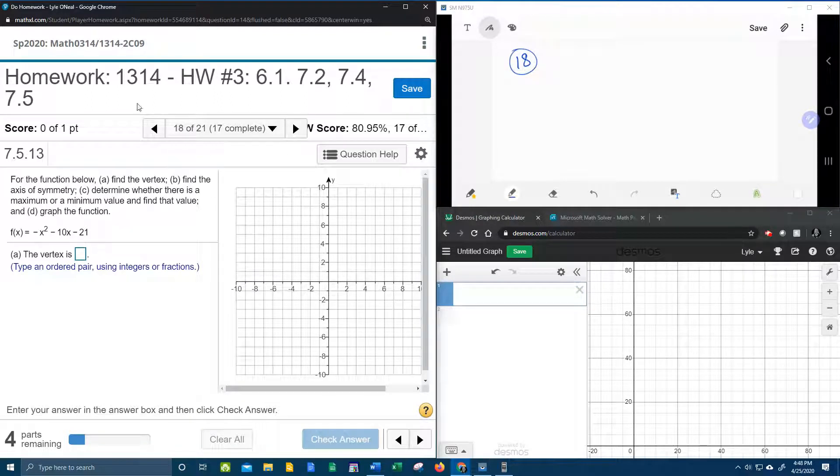Alright, here we go. Number 18 from our college algebra homework number 3 in MyLabMath. It says for the function below, find the vertex, the axis of symmetry, determine whether there's a minimum or maximum value and find the value, and graph. So there's a lot of stuff going on here.